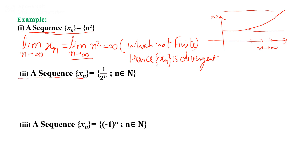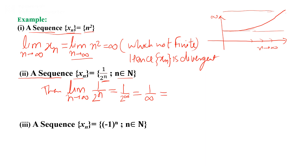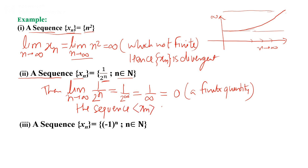Second example: the sequence 1/(2ⁿ) where n belongs to the natural numbers. We check the limit as n tends to infinity of 1/(2ⁿ). When we substitute n → ∞, we get 1/(2^∞), and something divided by infinity gives 0, which is a finite quantity. Hence the given sequence xn is convergent, because at infinity we get a finite value. Graphically, the sequence approaches zero as n tends to infinity.